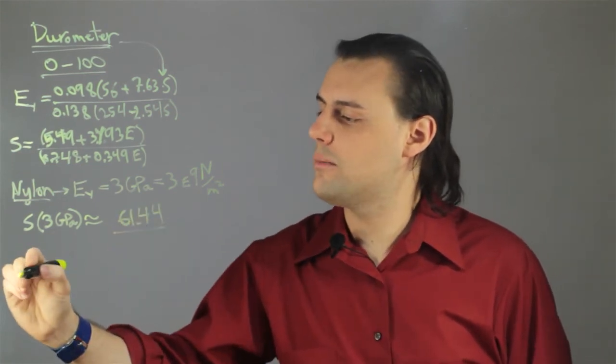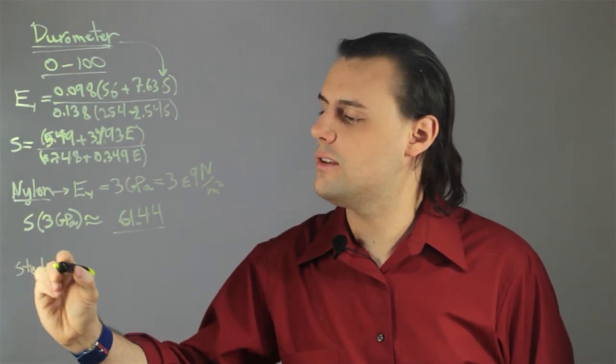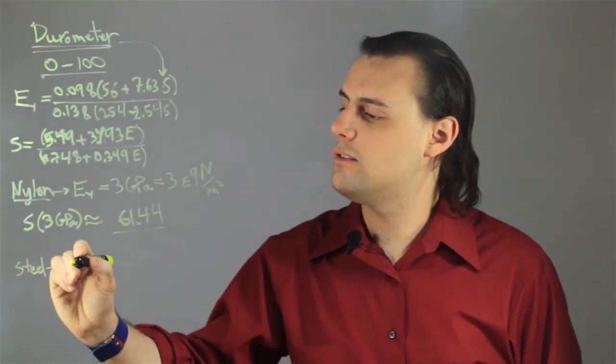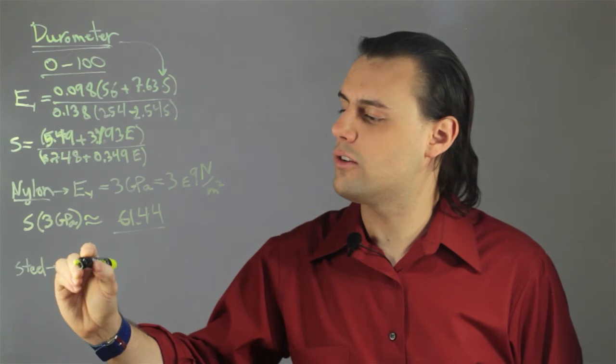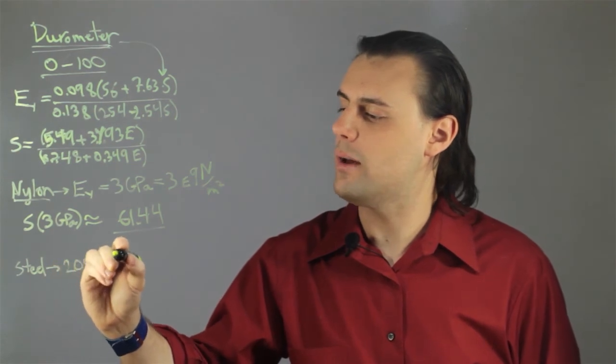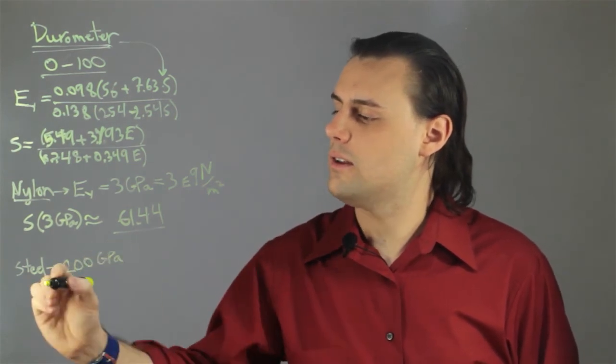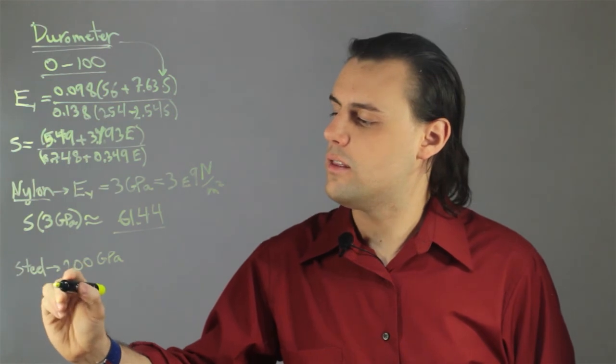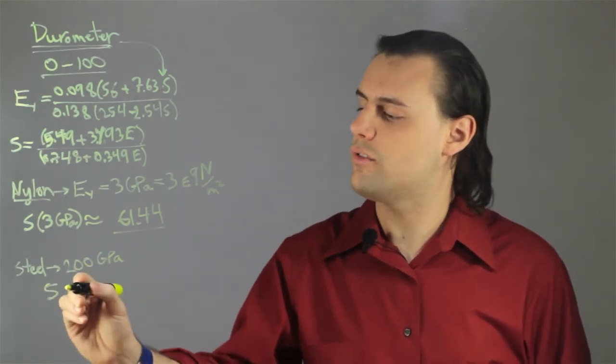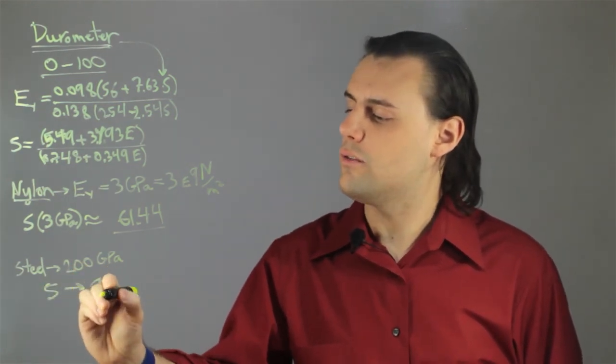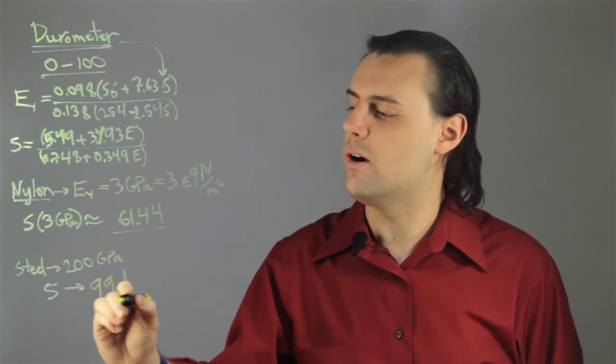If we do the same thing for steel, we see that steel has a Young's modulus of approximately 200 gigapascals. And therefore, the durometer measure for steel, if you calculate it out, is approximately 99.1.